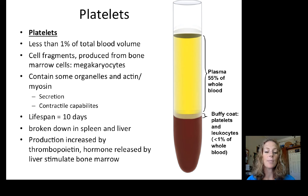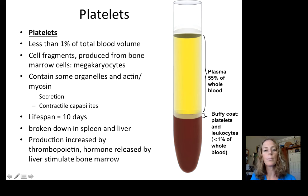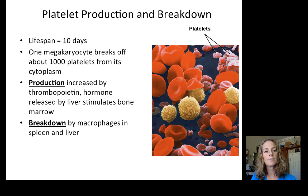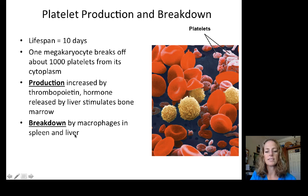Platelets can secrete and release chemicals. They are broken down by the spleen and the liver. Their production is increased by thrombopoietin, a hormone released by the liver to stimulate platelet production in the bone marrow. One megakaryocyte will break off about a thousand platelets from its cytoplasm, and they are broken down by macrophages located in the spleen and liver.